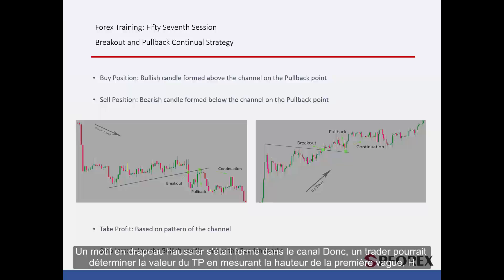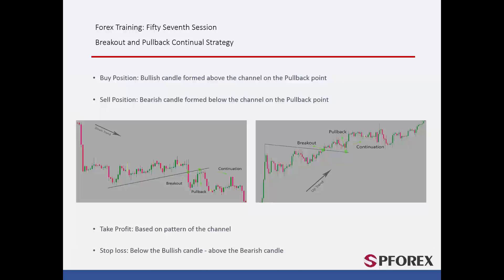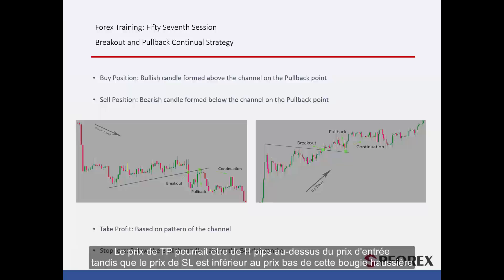A bullish flag pattern had formed in the channel, so a trader could determine the TP amount by measuring the height of the first wave H. TP price could be H pips over the entry price, while SL price is lower than the low price of the given bullish candlestick.